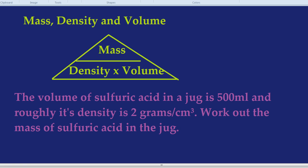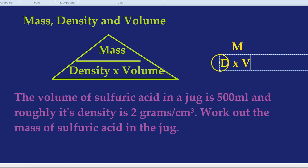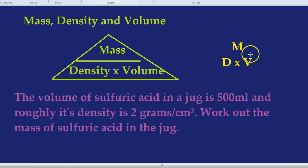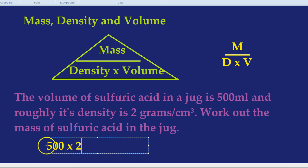Just as a way to remember the triangle, you might want to create your own abbreviation. MDV, movies don't vote. It doesn't really make too much sense, but you get the idea. We have the density, and we have the volume, and we're looking for the mass. If we cover up mass, that's density multiplied by volume. 500 multiplied by 2 is indeed 1,000. So that's 1,000 grams. 1,000 grams equals 1 kilogram. And there we go.